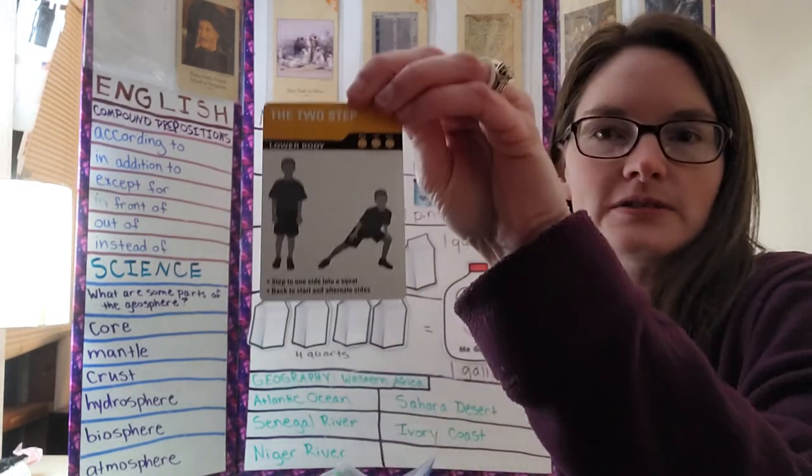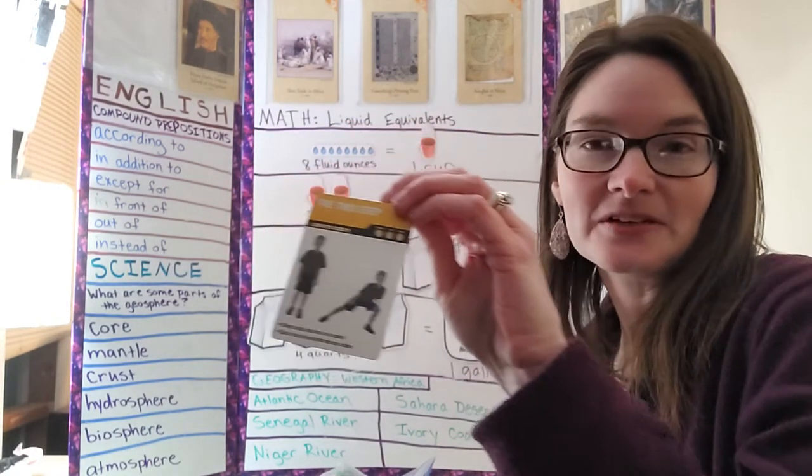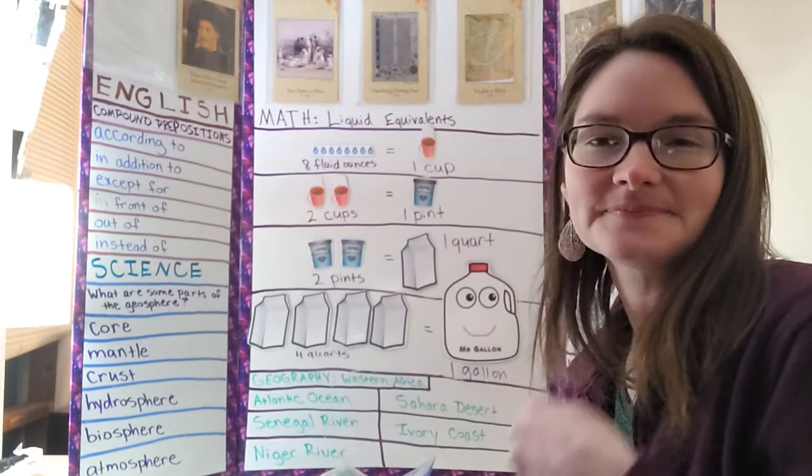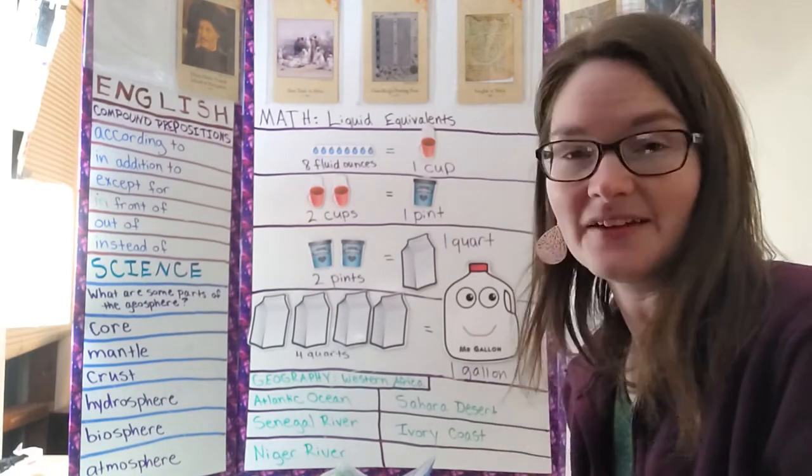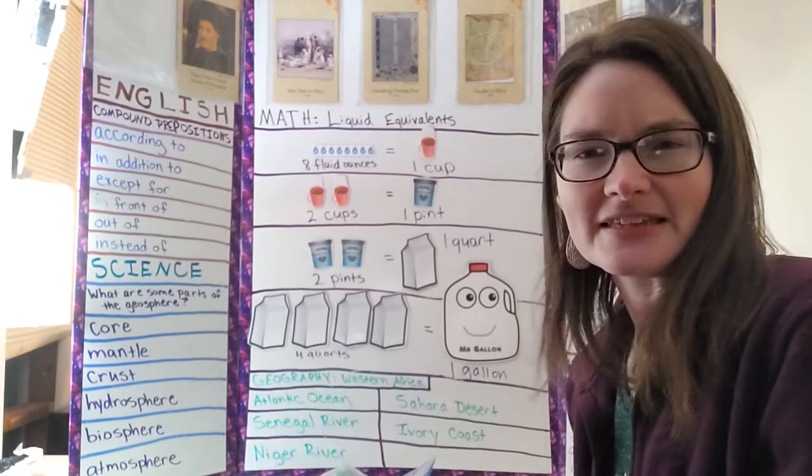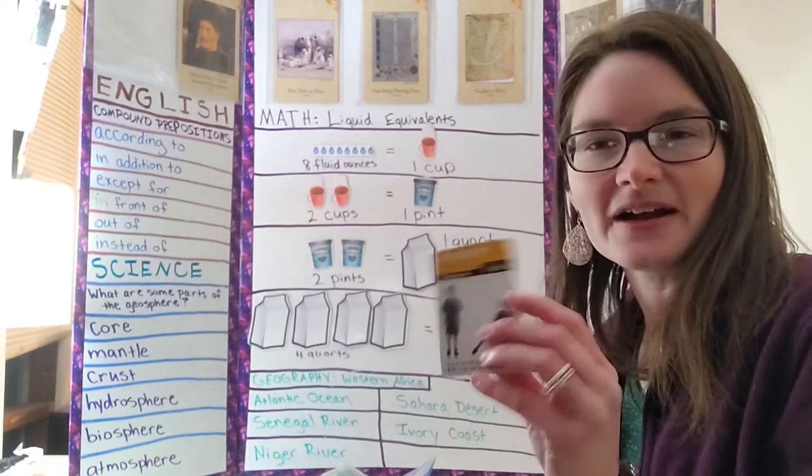It's called the two-step, so it shows you a picture of what you do and has a description. I looked through the deck ahead of time and picked a number of them that I felt like everyone could do and would be pretty fun. There's all kinds in here, but I didn't want a bunch that were down on the floor.